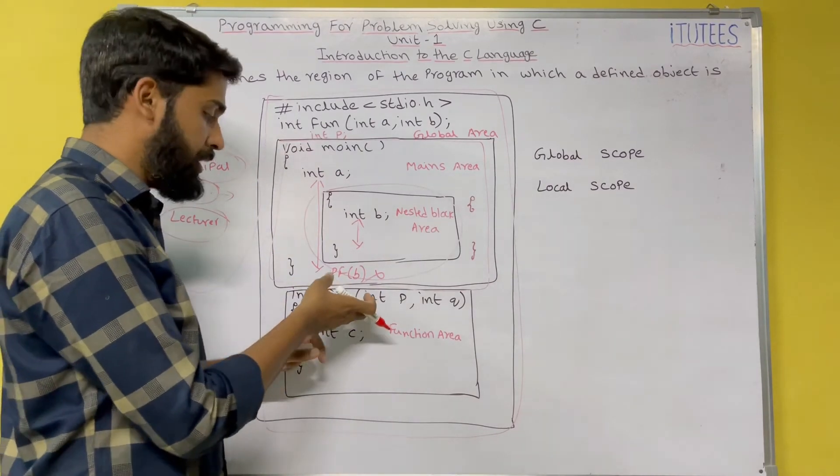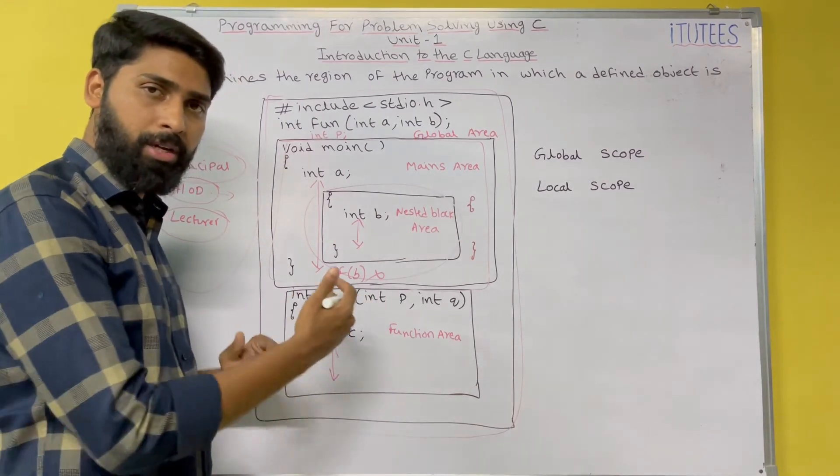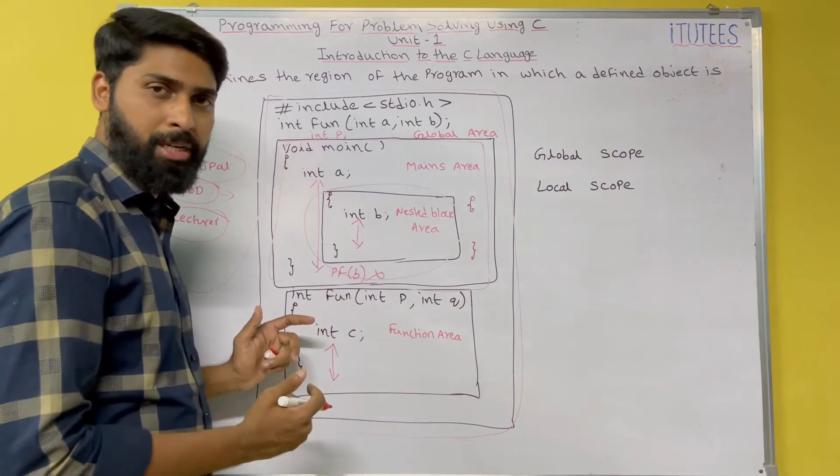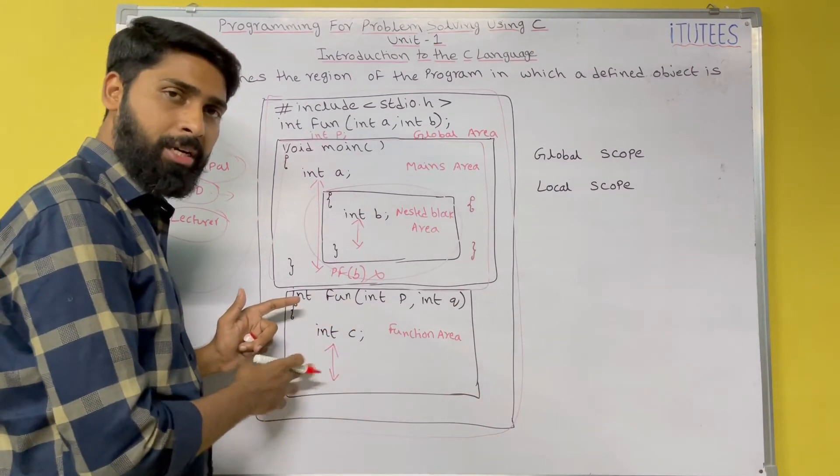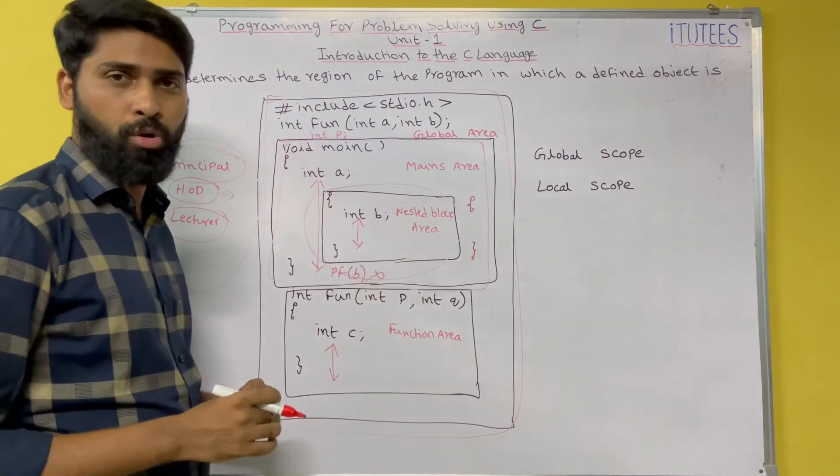And similarly, this int c is defined in this function. So the scope of the c is within this block only. So after declaration only, the scope will be started. And the block is ended. The scope of the variable also ended. So this is about the scope.